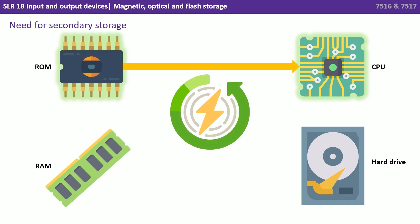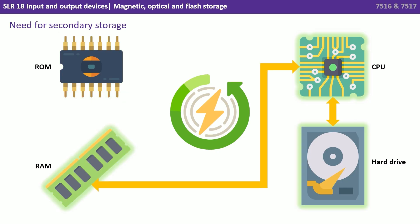When a computer first receives power and is turned on, the essential instructions on how to boot up have to be taken from the ROM, because ROM is read-only memory and it permanently holds the data inside it. Instructions from the ROM go to the CPU, which then tells the computer the operating system is on a secondary long-term storage device such as a hard drive. That can then be loaded off the hard drive and part of the operating system placed into primary memory or RAM.